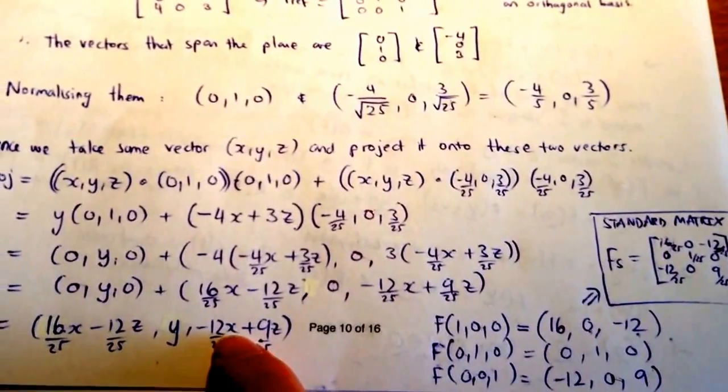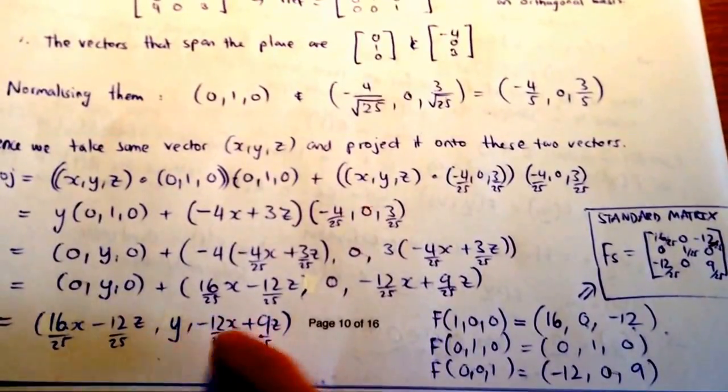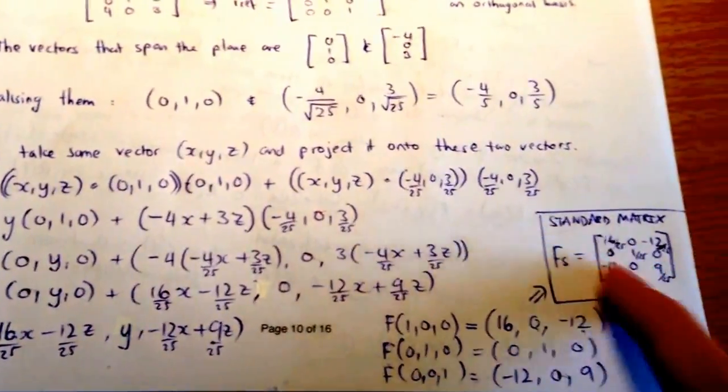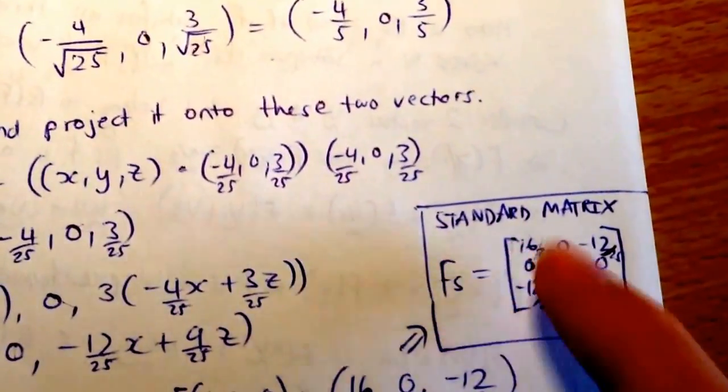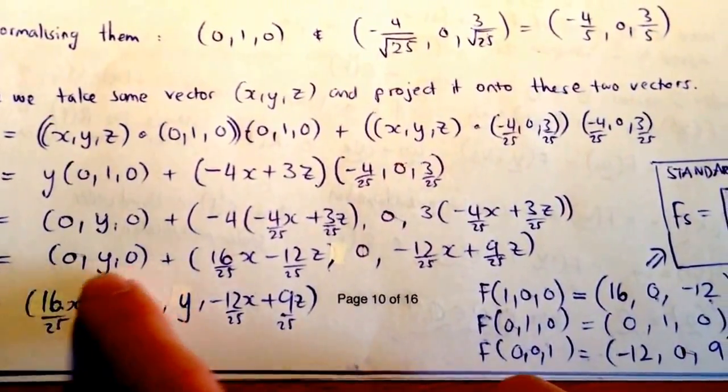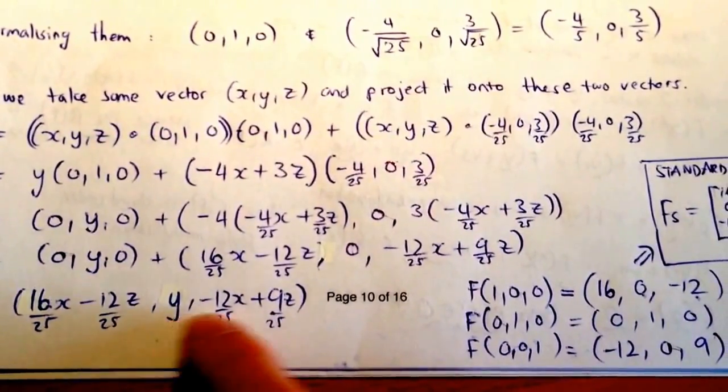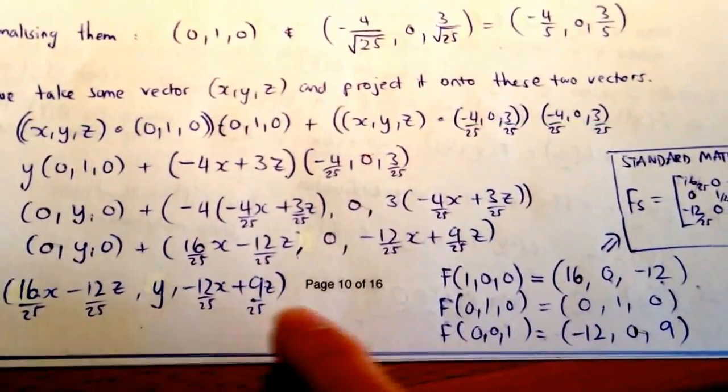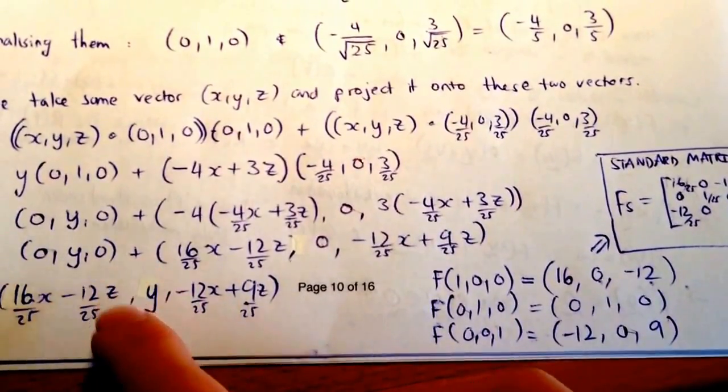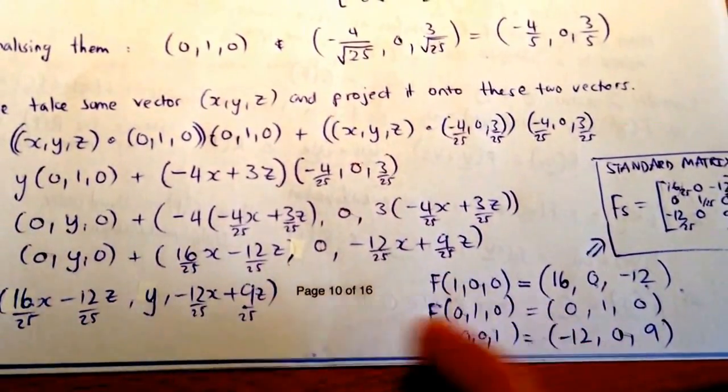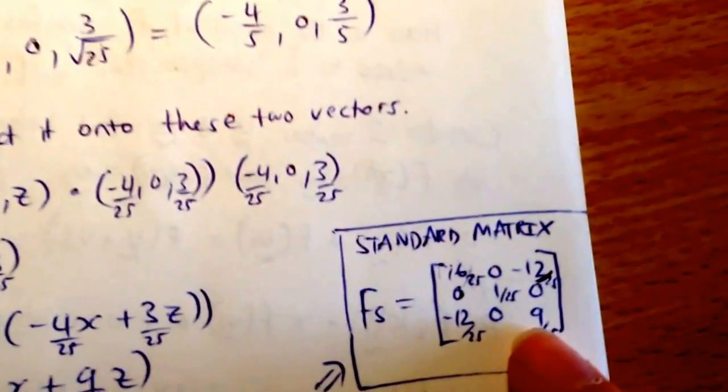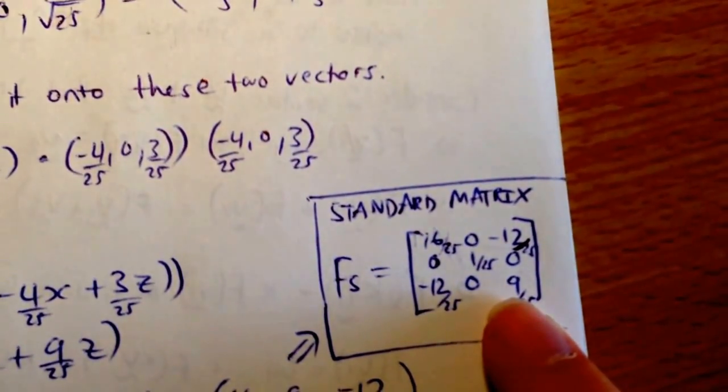Those two should just be divided by 25, as written in the first column here. We do the same for the second one by letting y equals 1. So obviously the first component's 0, the second component's 1, the last component's 0 because there are no y terms. For the last one, remember this is f of x, y, z, so the last one is 1. We're going to get negative 12 on 25 and 9 on 25. That's how we get the last one. And so, hence, there is our final standard matrix.